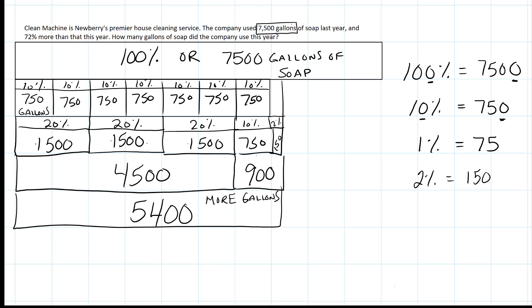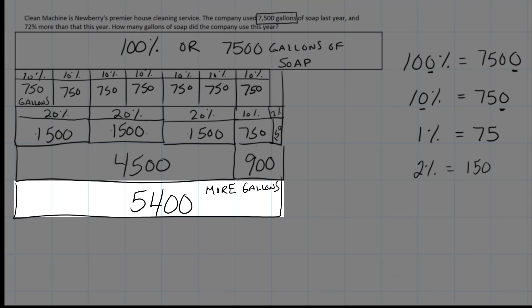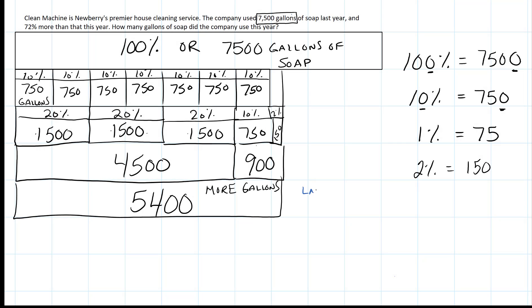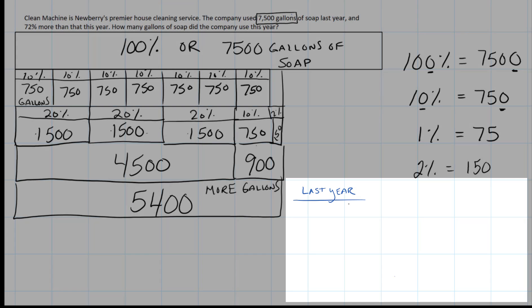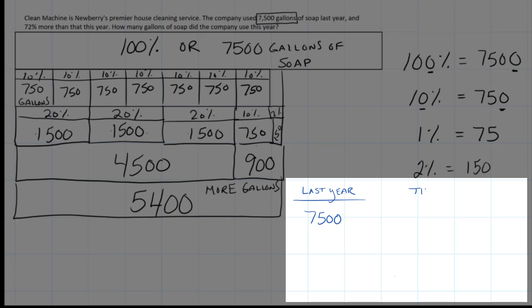5,400 is great, but it's not our answer. We want to know how many gallons of soap did the company use this year. So we have to take what they did last year and add it to what we used this year. Last year was 7,500. This year was 5,400. Add those two amounts together and we're going to end up with 12,900 gallons of soap. First one done.